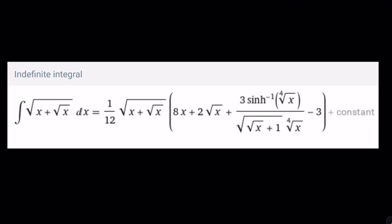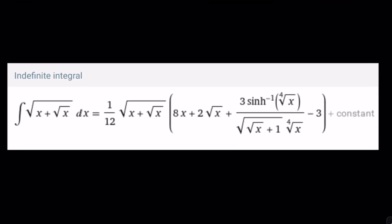The result from Wolfram Alpha looks quite different — it involves sinh inverse and so on. Why did it come out differently? I'm not sure; I haven't checked it. Anyway, this brings us to the end of the video. Thank you for watching — please comment, like, and subscribe. I apologize that this was a long video — it took a while. Take care and bye-bye.